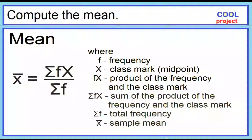The mean is equal to the sum of the product of the frequency and the class mark divided by the total frequency. Where f is the frequency, capital X is the class mark or midpoint, fX is the product of the frequency and the class mark, summation of fX is the sum of those products, summation of f is the total frequency, and x-bar is the sample mean.